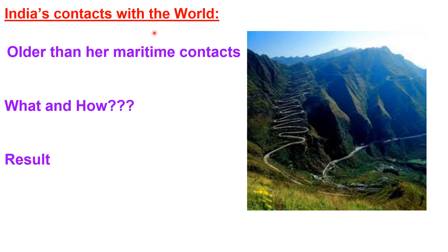India's contacts with the world are older than her maritime contacts. Maritime contacts means trade that went on through water transport. When Europeans came to India, they established contacts through water-based routes. However, India's contact with the rest of the world is much older than those maritime contacts. India's contact with the world has continued through ages, but her relationships through land routes are much older than maritime contacts.